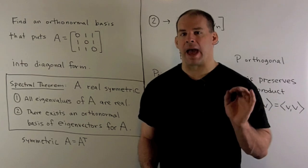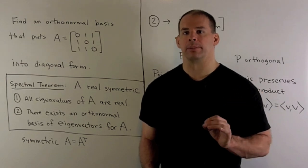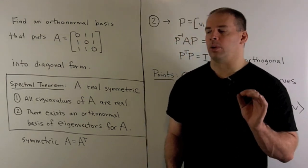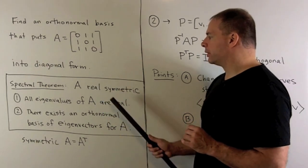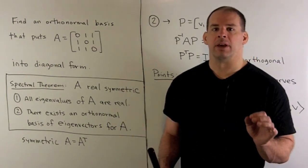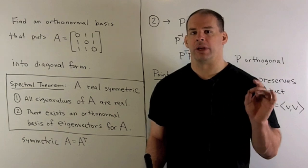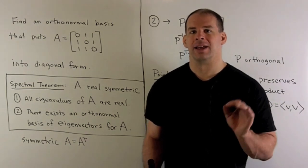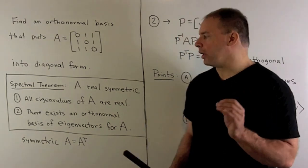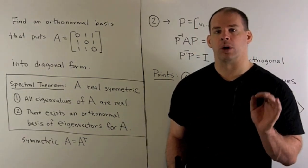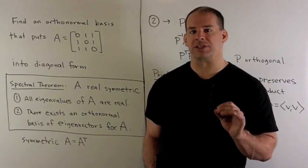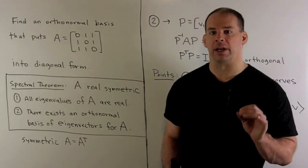Our problem is going to be an application of the spectral theorem. We have A is a real symmetric matrix, so all the entries are real. We take the transpose of our matrix, we get our matrix back. Then all the eigenvalues for our matrix are going to be real, and we're going to be able to find an orthonormal basis of eigenvectors for our matrix.